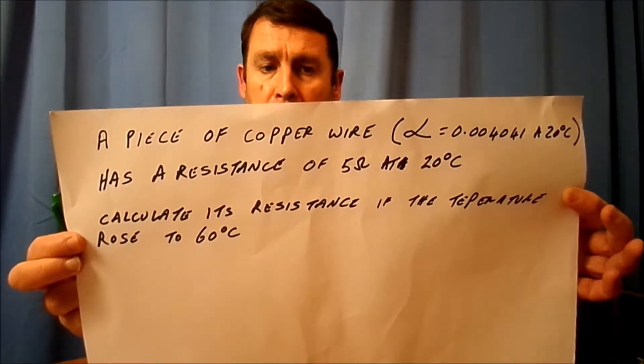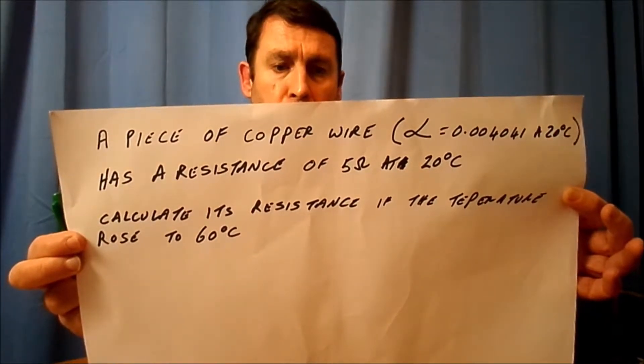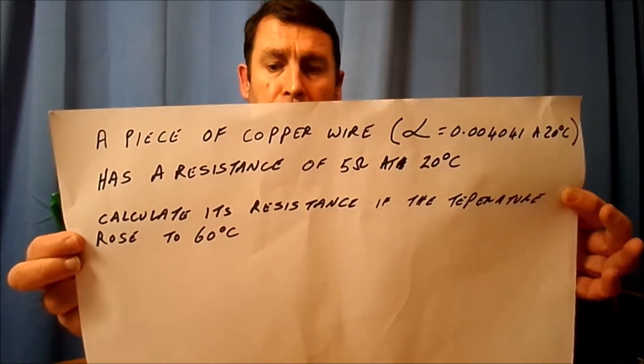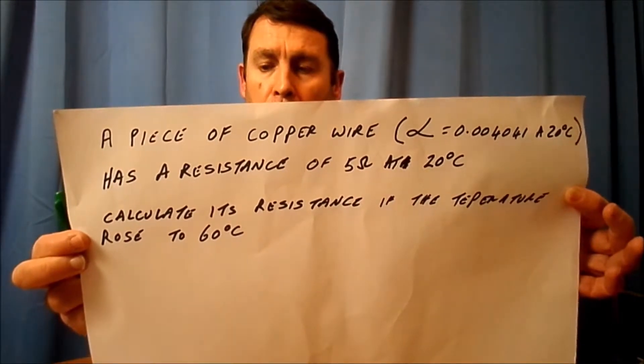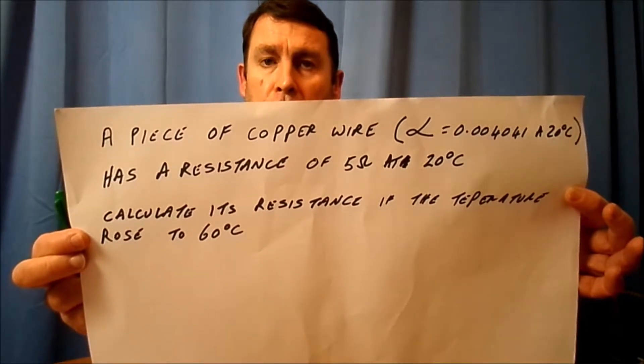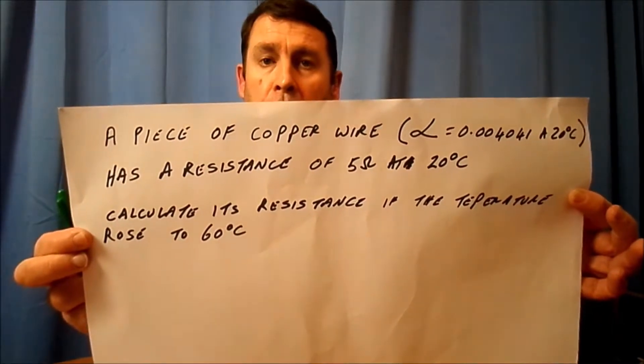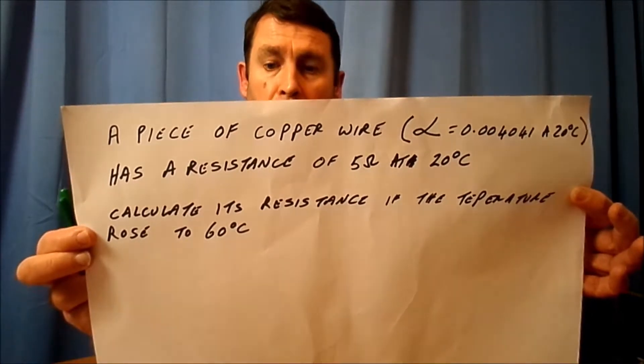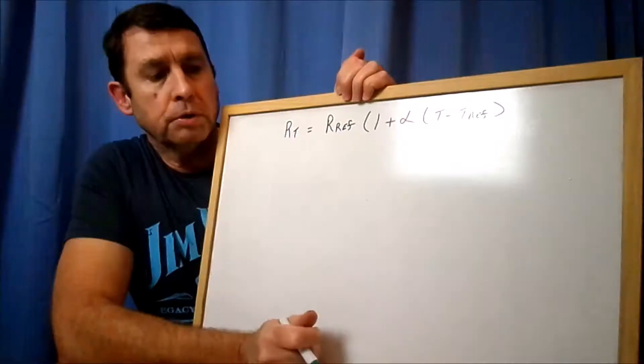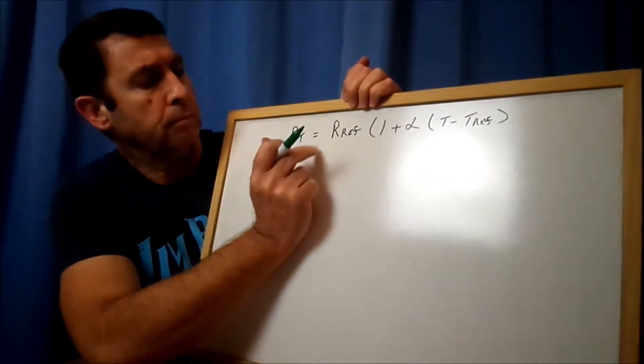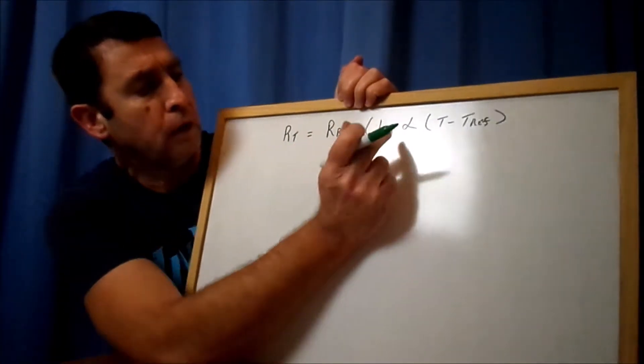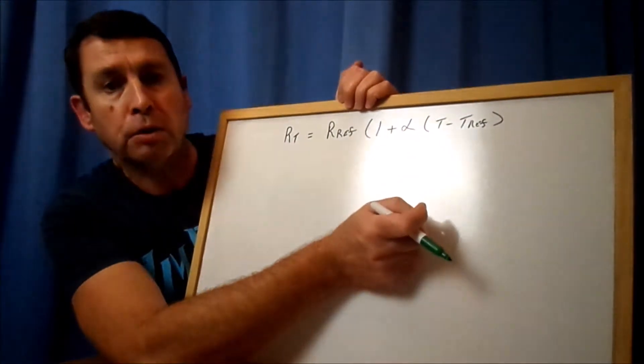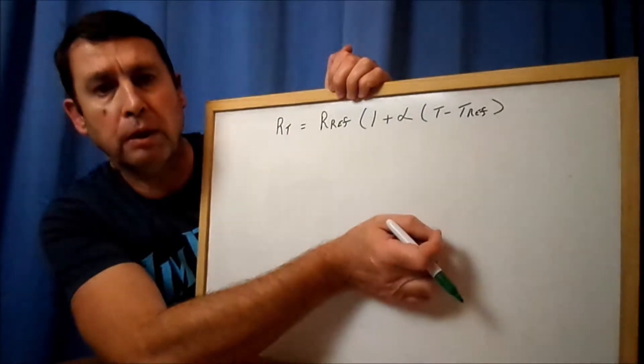Now this has a resistance of 5 ohms at 20 degrees C. Calculate the resistance if the temperature rose to 60 degrees C. If you want to write that down, pause the film, and then I'll go through the calculation. Starting with our formula: RT equals RF times one plus alpha times T minus T ref.